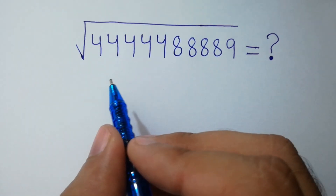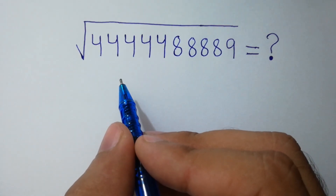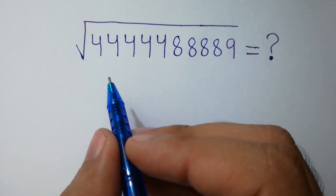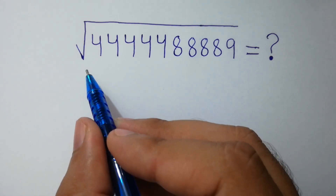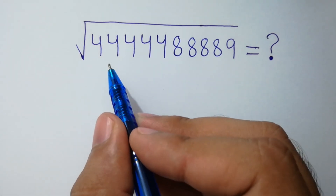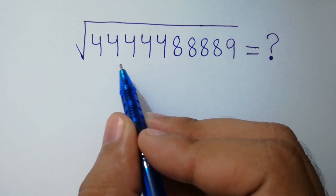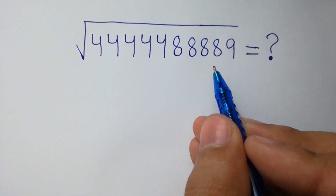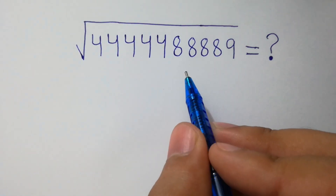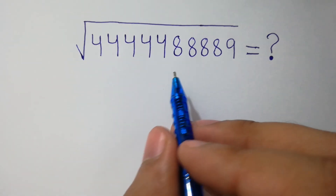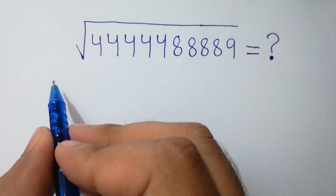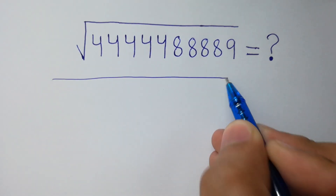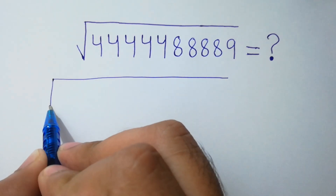Hello friends, can you solve this without using any calculator? We have the fifth root of 5^44 times 8^9. Let's solve it. We can write the fifth root of 5 times 4 — that is 1, 2, 3, 4, 5 — and this is 1, 2, 3, 4, 5.